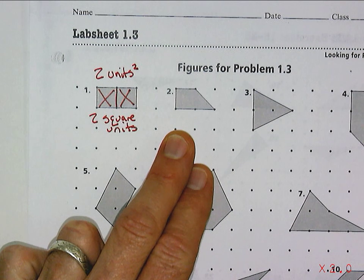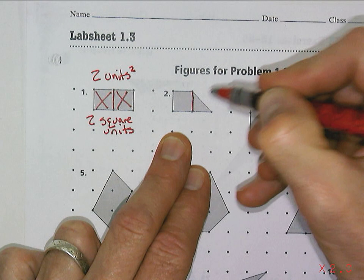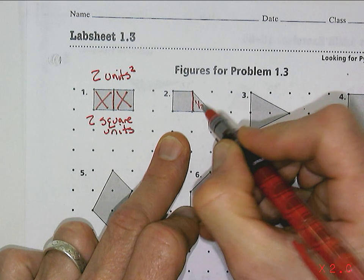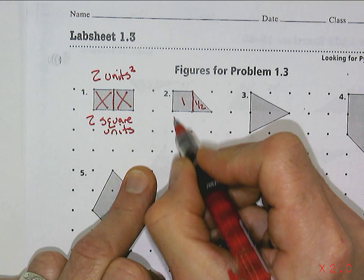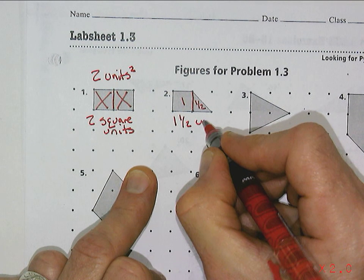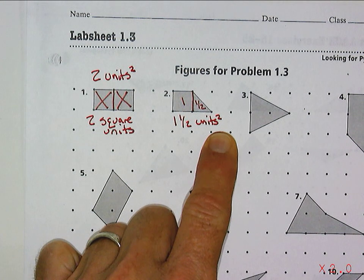We look at the second one here - we have a whole square and we have another half of a square, and so the total is one and a half square units. We have to use the little square term because we're talking about area.